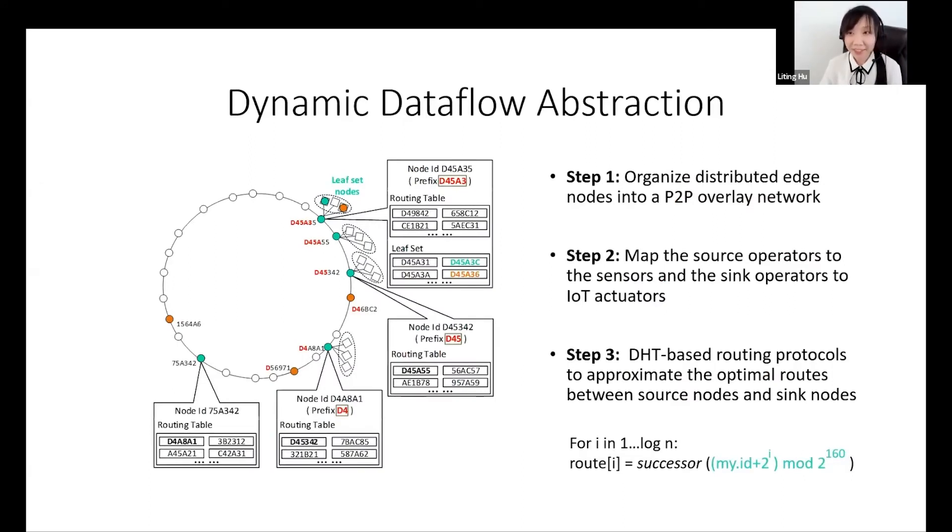Here we use an example of the process of building the dynamic data flow graph for an IoT stream application. It has three steps. First, we organize distributed edge nodes into peer-to-peer overlay networks. Second, given a stream application, we map the source nodes to the sensors. We map the sync nodes to the IoT actuators.